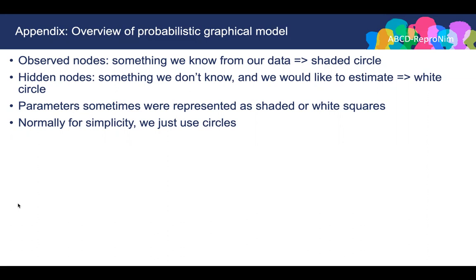There are also parameters in the model. The parameters also have known and unknown parameters, which are normally indicated by shaded or white squares. But people sometimes ignore the difference between the data and parameters, and just use circles to represent all the parameters.